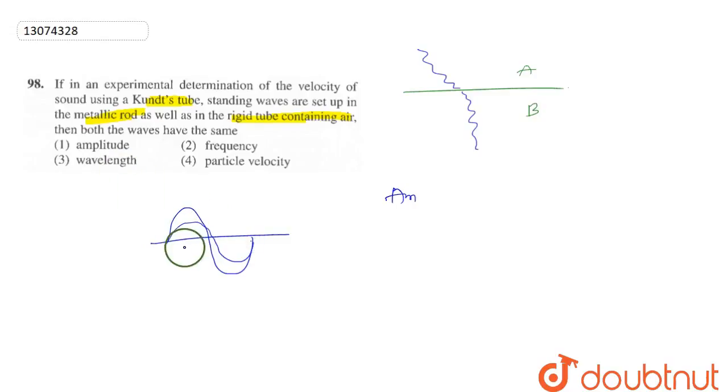And the wavelength is reduced. Particle velocity is reduced. Then, the velocity obviously changes.